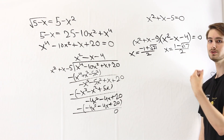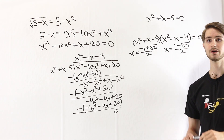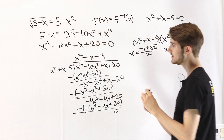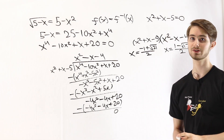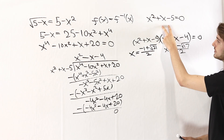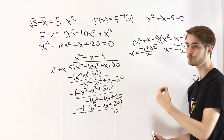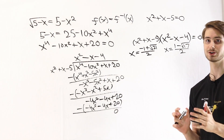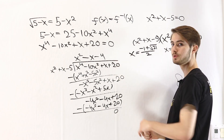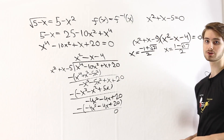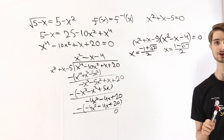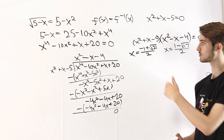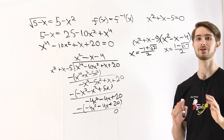So there are exactly two real solutions to this equation. The method: first, recognize the equation is of the form f of x equals f inverse of x, then solve the easier f of x equals x to get x squared plus x minus 5 as a factor. Use that to factor the quartic via polynomial long division into two quadratics, apply the quadratic formula, then eliminate extraneous solutions. If you're interested in why this quadratic is guaranteed to be a factor of the quartic, there's a linked video in the description explaining that as well.